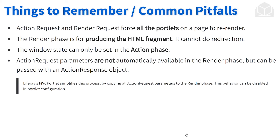A couple of things to remember when talking about the portlet lifecycle as a whole: when we're looking at the action request, the render request is always going to follow, and as the render request is occurring, all portlets on the page will refresh as well. The render phase is used for producing the HTML fragments — we can't do any sort of redirection with it. Window states will be set during the action phase. Action request parameters are not automatically made available in the render phase, but you can pass parameters from the action request object to the render phase — you just have to do a little bit of work to get that specific parameter from the action phase over to the render phase.